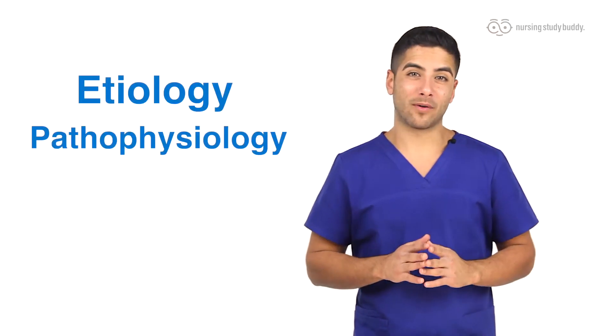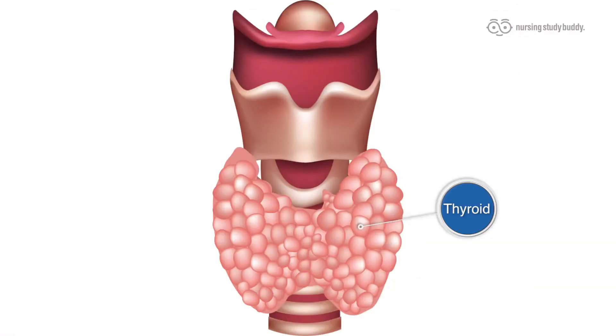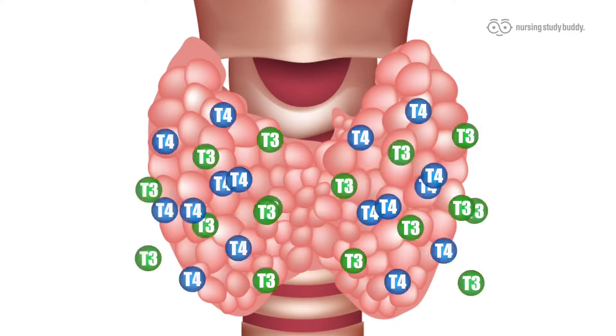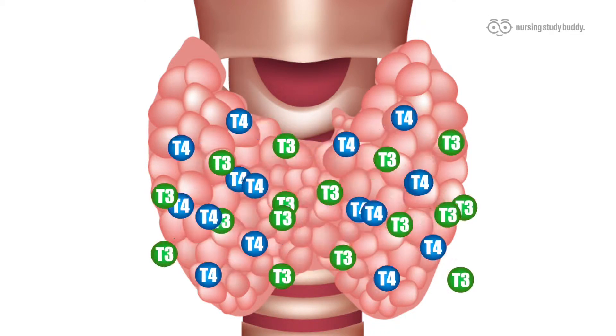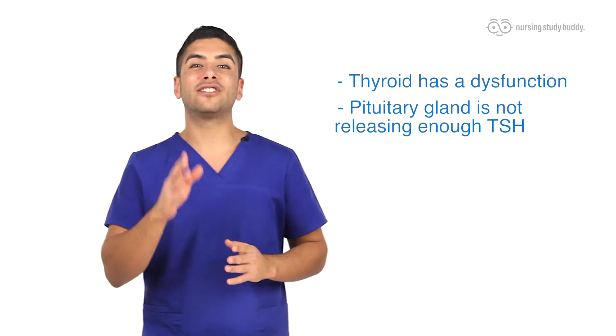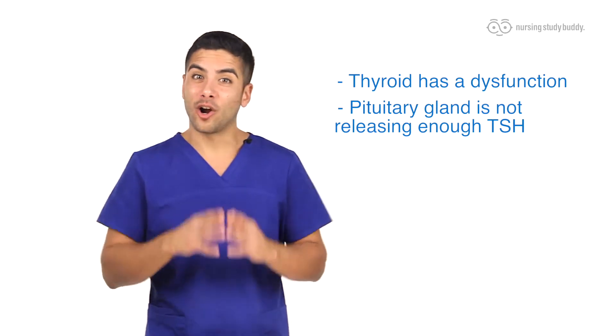Progressing to the etiology and pathophysiology of hypothyroidism: hypothyroidism is caused when the thyroid does not make adequate amounts of T3 and T4. In hyperthyroidism, too much of these hormones results in an increase in the metabolic process, so naturally inadequate amounts will lead to a decrease in the metabolic process. This condition can have one of two causes: either the thyroid itself has a dysfunction, or the pituitary gland is not releasing enough TSH, or thyroid stimulating hormone, to stimulate the thyroid.